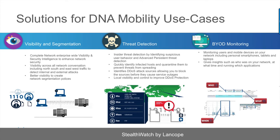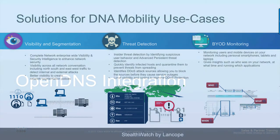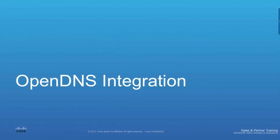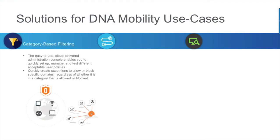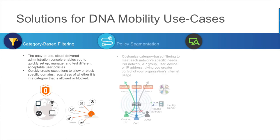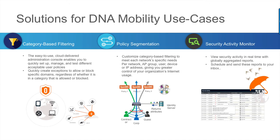Cisco's integration with OpenDNS allows category-based filtering in an easy-to-use cloud-delivered system to quickly set up, manage, and test different acceptable user policies within the enterprise. Using a single SSID, customized category-based filtering per network, per AP group, per user, and per device gives you greater control of your organization's internet usage. Further, all this security activity can be viewed in real-time with globally aggregated reports that can be scheduled to your inbox for periodic reporting and analysis.